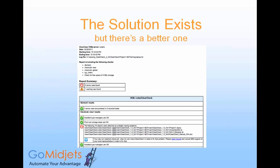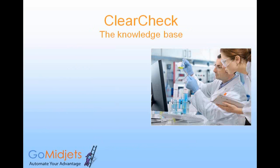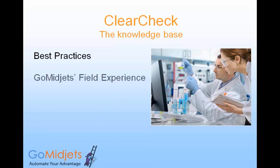At GoMidgets, we create solutions that address all of these problems. For example, ClearCheck is a diagnostic tool that supports rational ClearCase. ClearCheck provides a comprehensive report which summarizes the state of the system and gives administrators full details on any existing or potential problems. At the heart of ClearCheck, there is a knowledge base that collects information on what can go wrong with ClearCase and what you can do about it.